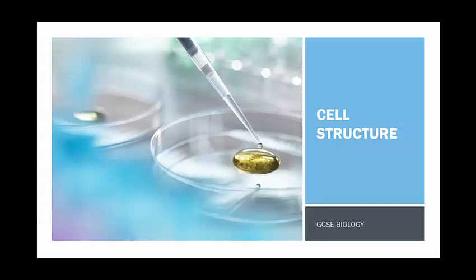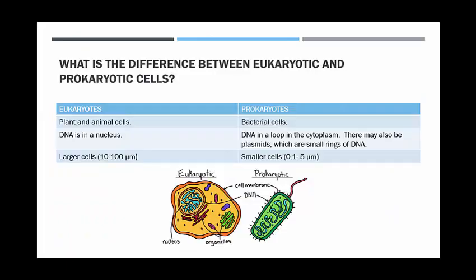We're going to start with the difference between prokaryotic cells and eukaryotic cells. Eukaryotic cells are plant or animal cells, whereas prokaryotic cells are usually bacterial cells.